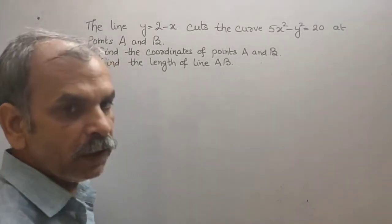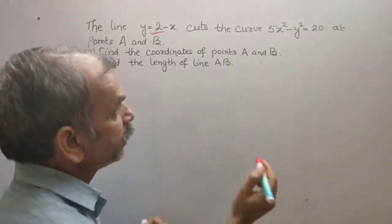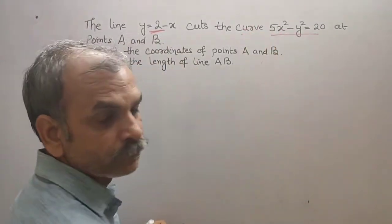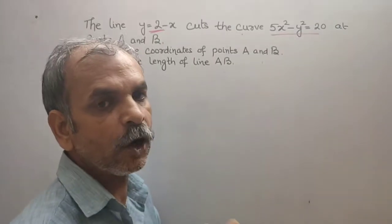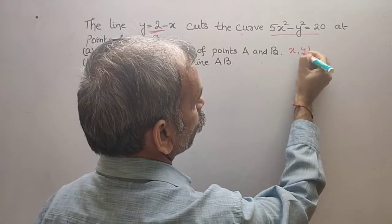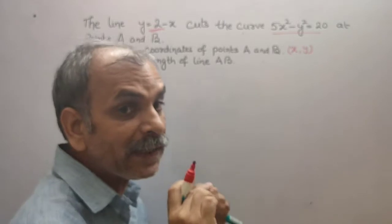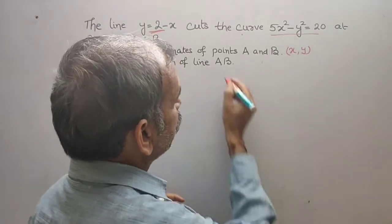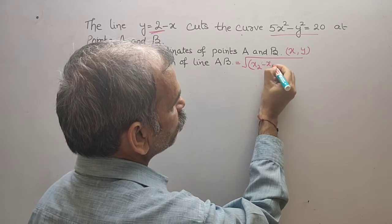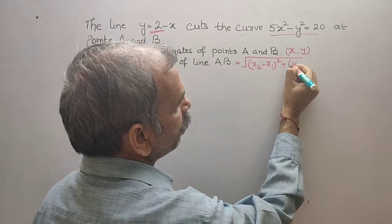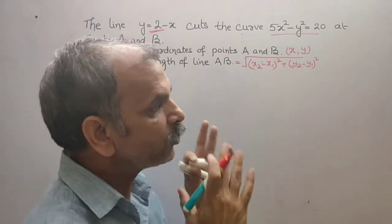Now, first we will go for that. So what they have given? This is your line equation y = 2 - x. Here they have given the equation of the curve and they have told you to find the coordinates, that means x comma y. And here they have told find the length. So length means what? By distance formula we have to find out. What is that? So AB is equal to root over (x₂ - x₁)² plus (y₂ - y₁)². That we have to put, then you will get your answer.